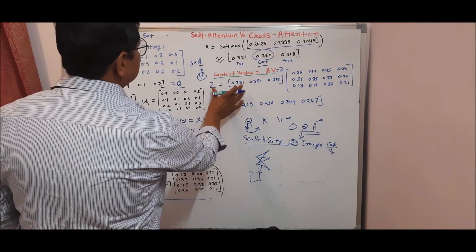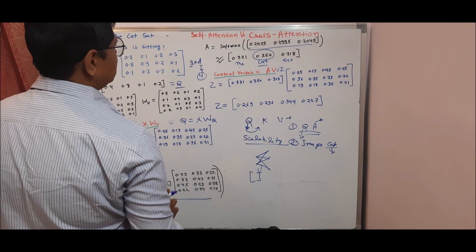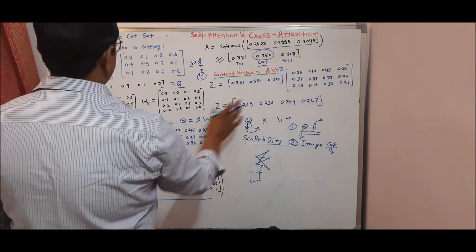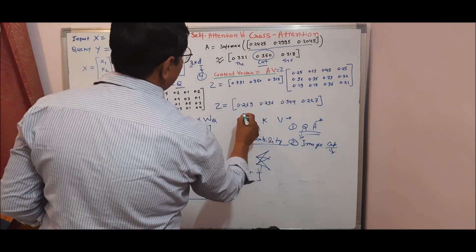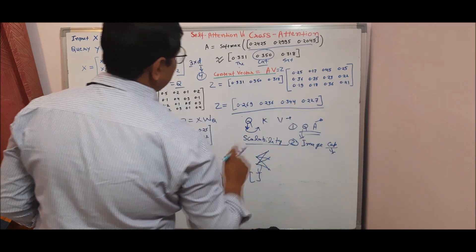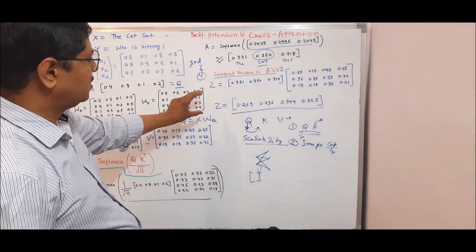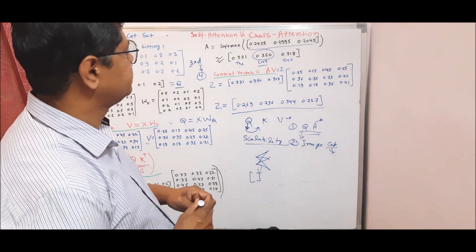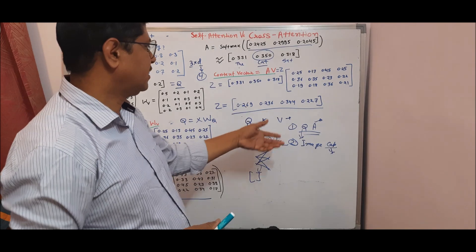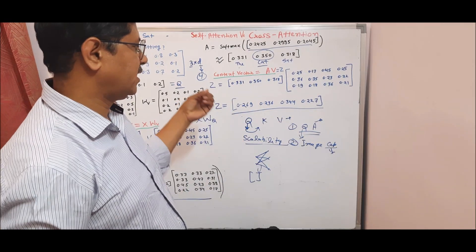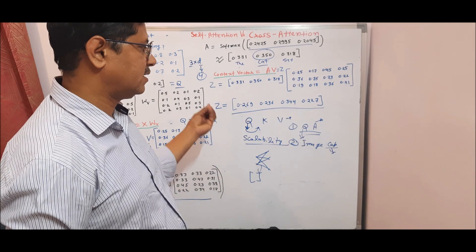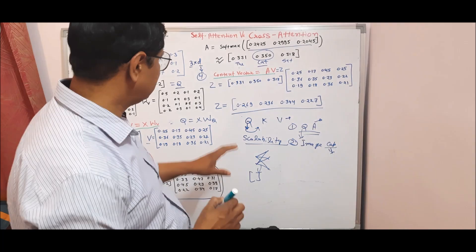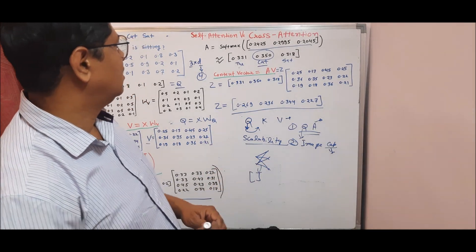The next part is to calculate the context vector. It is simply the dot product of the attention scores and the value vector. This dot product gives the final output. We generally use this context vector in downstream programming tasks such as question answering, sequence-to-sequence modeling, summarization, guided summarization, and all other tasks where we apply the cross-attention mechanism. This is the general use of cross-attention.